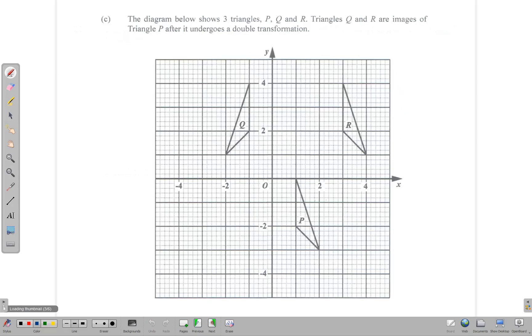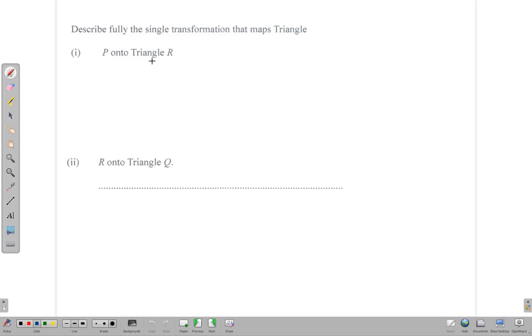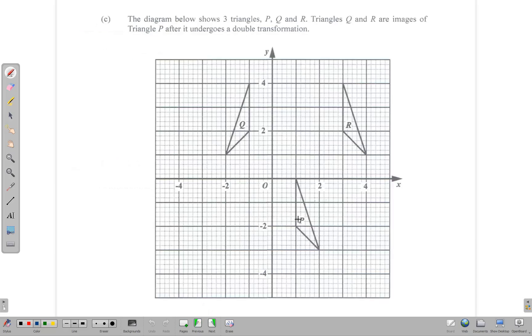Moving on to the next question, we have a diagram. The diagram below shows three triangles P, Q, and R. Triangles Q and R are images of triangle P after it undergoes a double transformation. The first question is to describe fully the single transformation that maps triangle P onto R. So the question is how does P get to R. By observation, you can realize that this is a push that has been pushed in this direction, and because of that it is a translation.